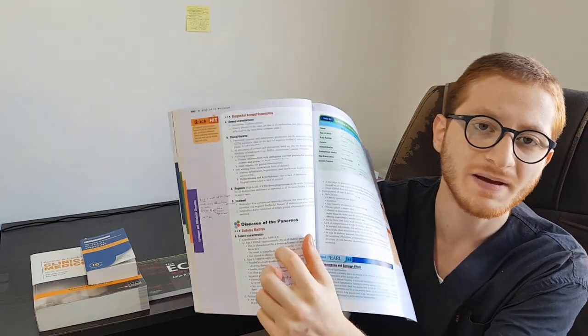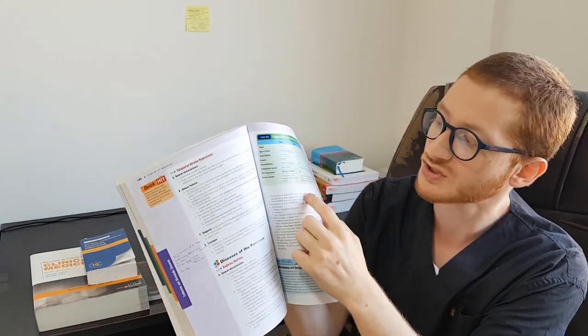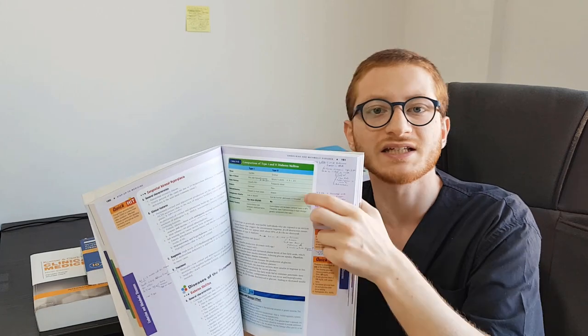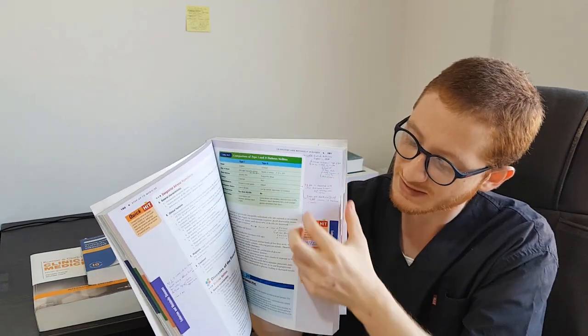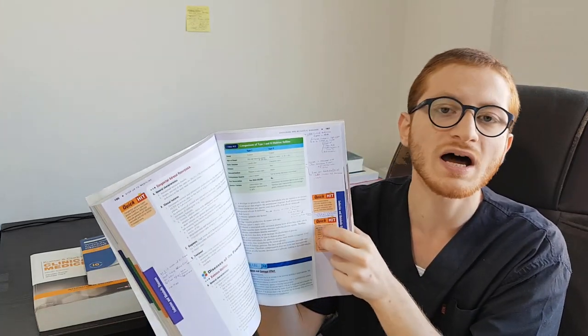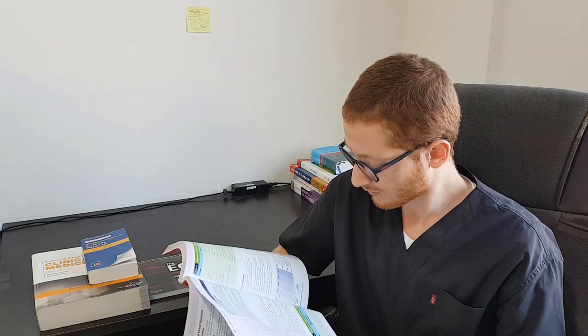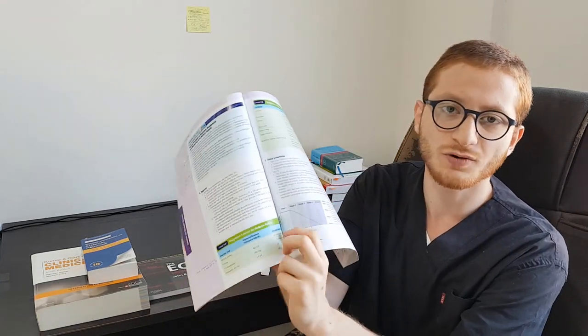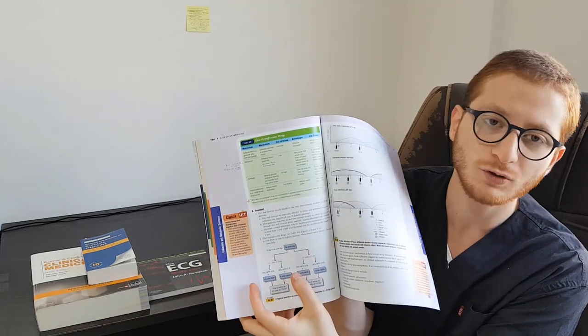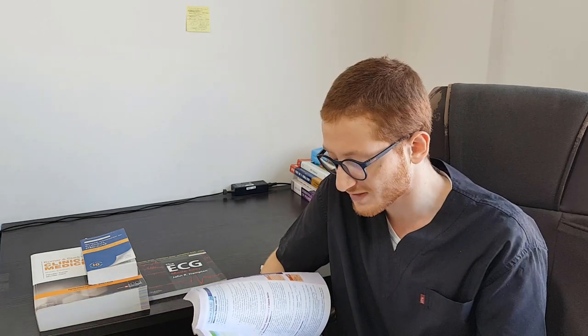It starts with the organ — for example, diseases of the pancreas — then moves on to relevant physiology and compares types of diabetes. There are nice tables that explain the high-yield concepts, a nice space for annotations, and boxes highlighting high-yield information about common student mistakes. It also has tables for common numbers, diagnostic criteria, algorithms, and flow diagrams.